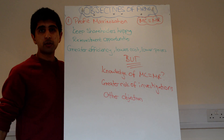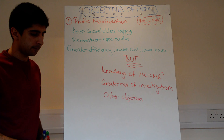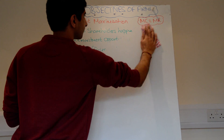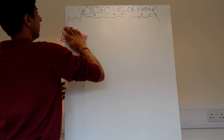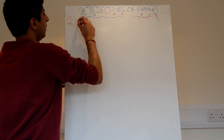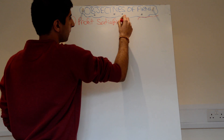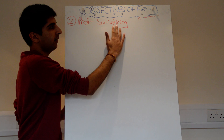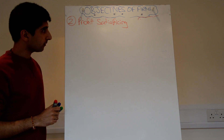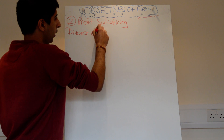Maybe firms will have other objectives. Profit maximisation has all these major benefits, but a firm might want to pursue other objectives. Another major objective that firms might want to follow is profit satisficing. The word is actually a combination of two words: 'satisfy' and 'sacrifice'.